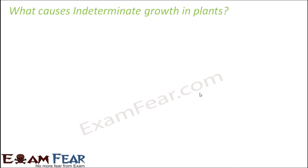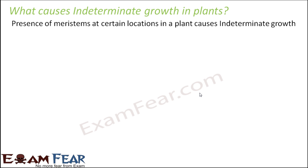So now the question is, what causes indeterminate growth in plants? Why do some plants keep on growing throughout their life? That is because of the presence of meristems. We spoke about meristematic tissues — they are nothing but the meristems. These meristems are present at certain locations in a plant, and due to their presence, growth is always there. The function of these meristematic tissues is to divide; when they divide, more cells are formed, and so cell growth takes place due to the presence of meristematic tissues.